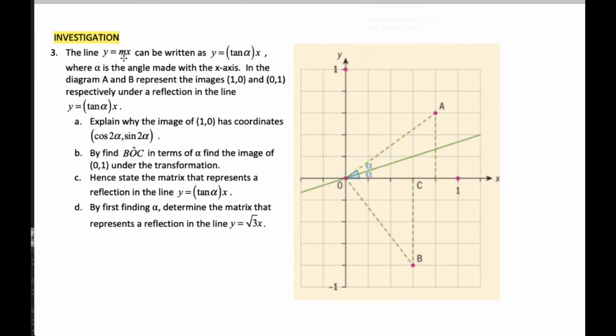Okay, so the first thing I want to talk about now that you've tried the investigation yourself: the line y equals mx can be written as y equals tangent alpha x. Because if I think about this, slope m is rise over run. So I go rise over run, which is sine over cosine. Sine over cosine of alpha is tangent. So the slope of a line can be rewritten as tangent alpha.